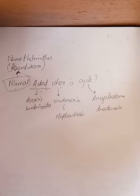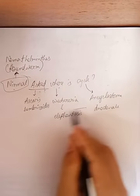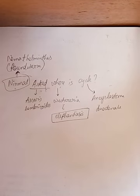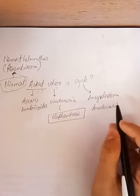Where gives you Wuchereria. Wuchereria causes Elephantiasis. And Cycle gives you Ancylostoma.